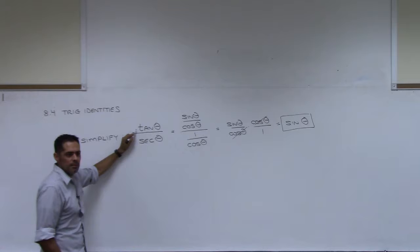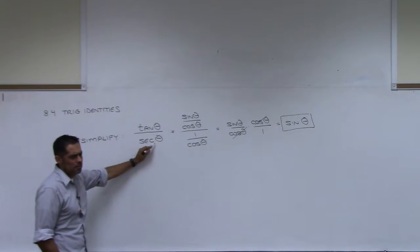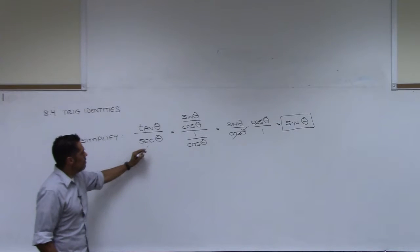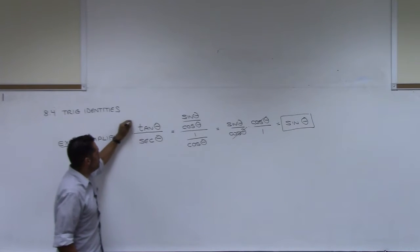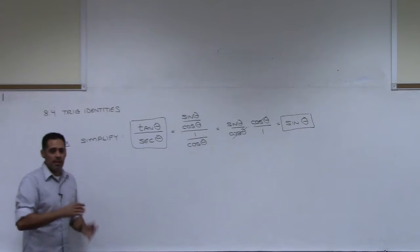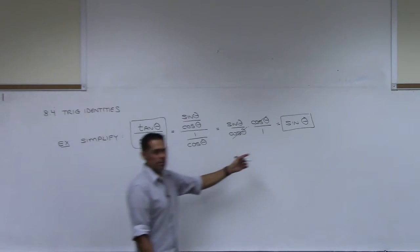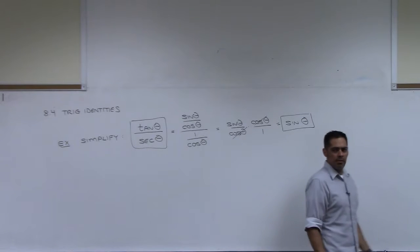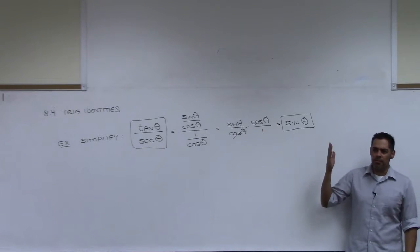It's undefined, isn't it? And secant of pi over 2 is undefined also. So if I gave you this expression right here and said, plug pi over 2 in, you'd be like, can't do it, right? But if I gave you this other expression and told you to plug in pi over 2, you'd have no problem. Sin of pi over 2 would be 0.